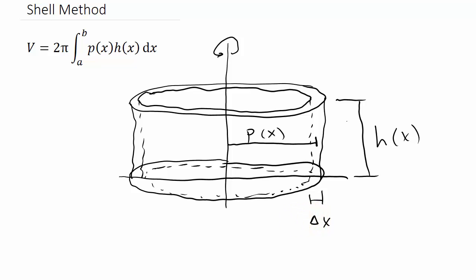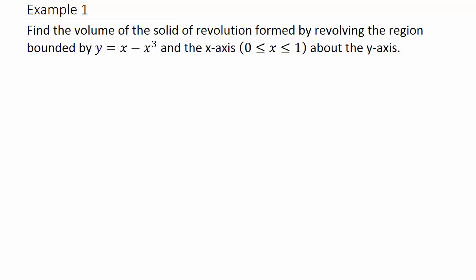Let's look at an example. Find the volume of the solid of revolution formed by revolving the region bounded by y equals x minus x cubed and the x-axis from 0 to 1 about the y-axis.